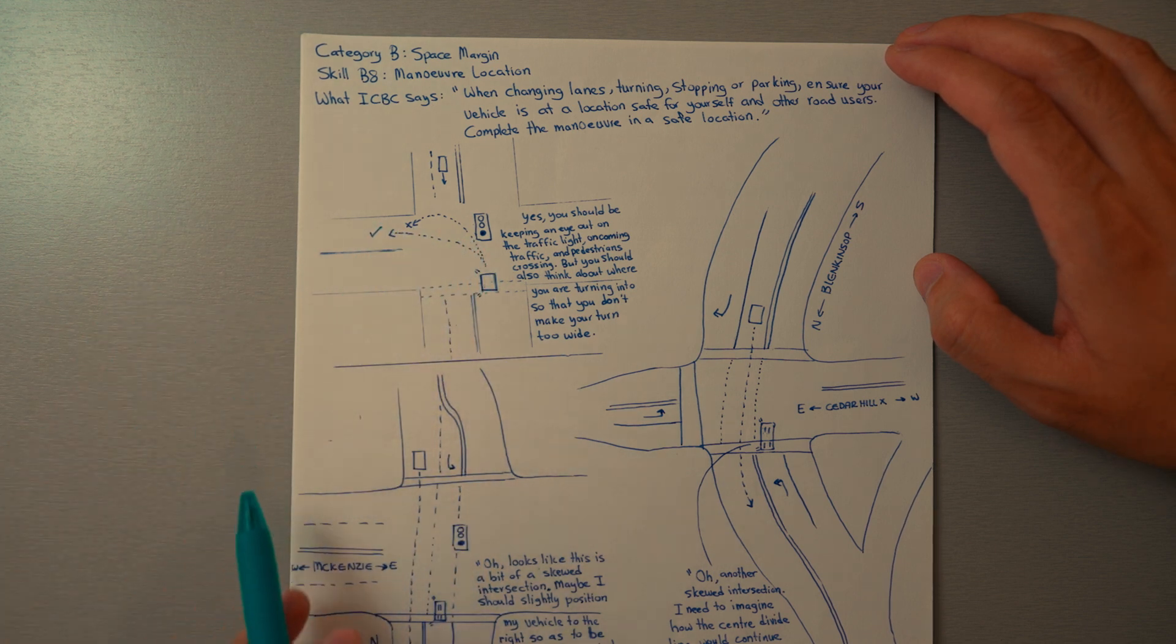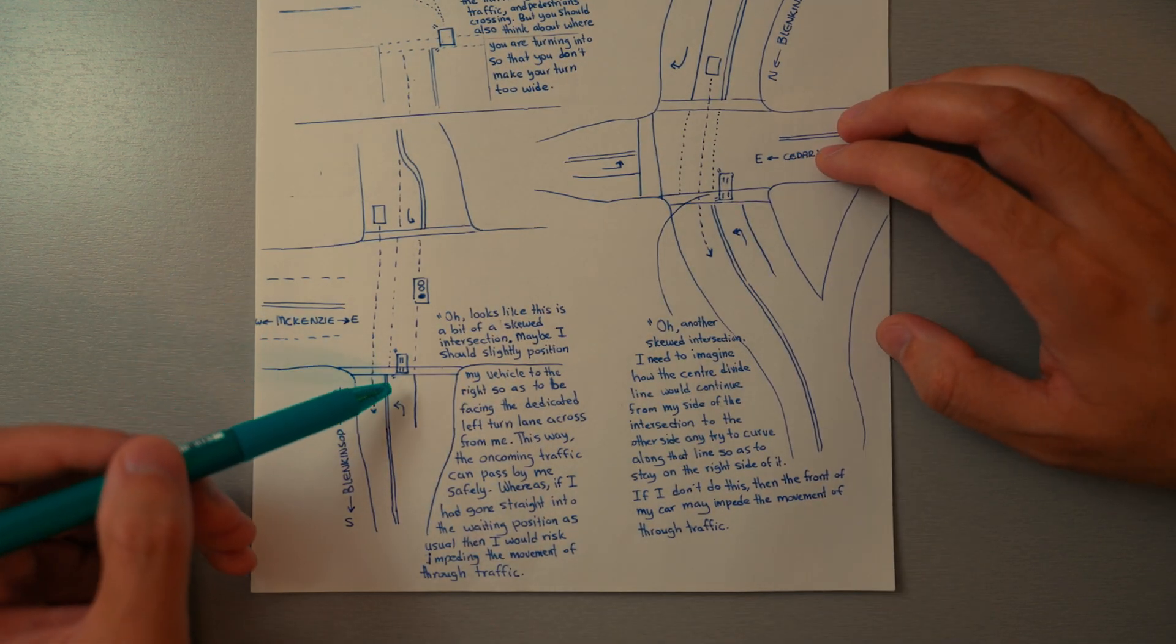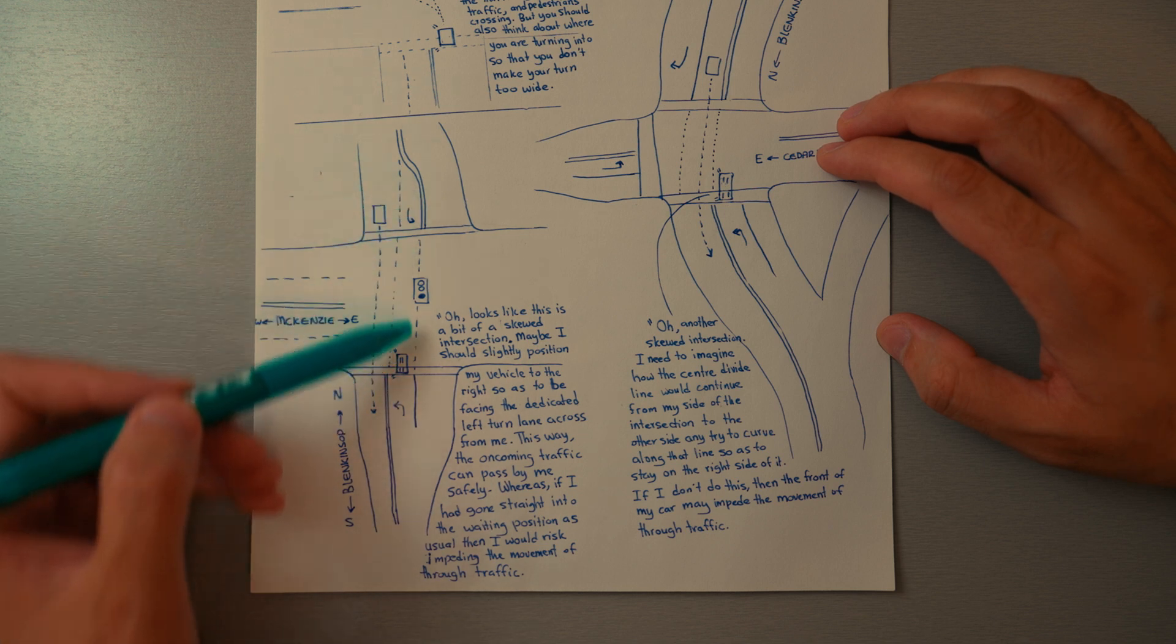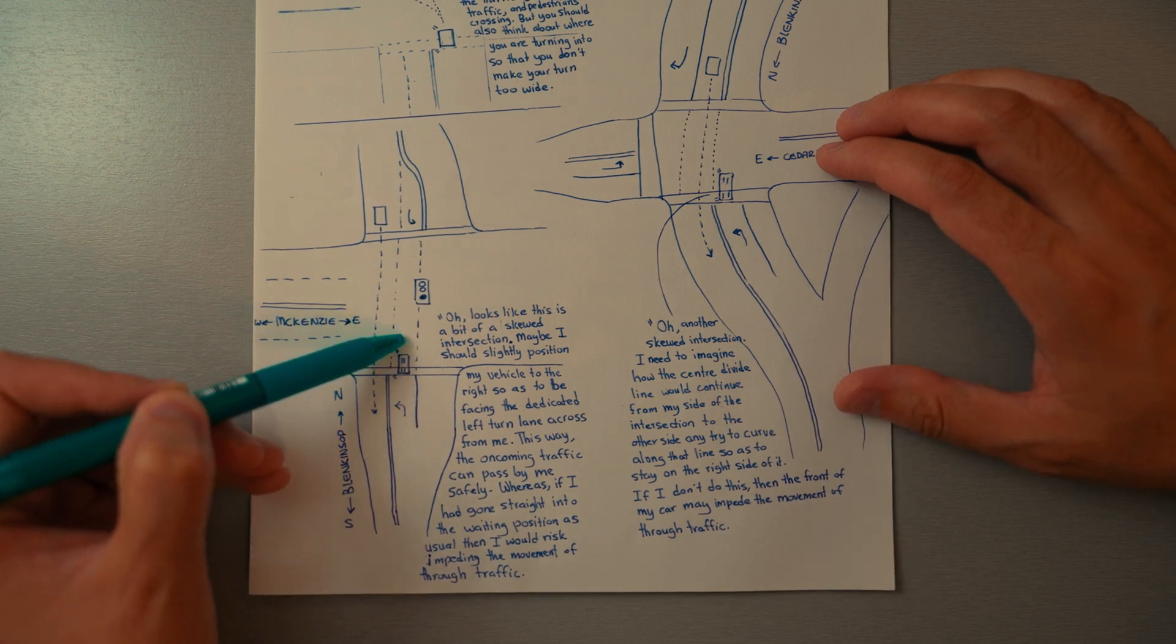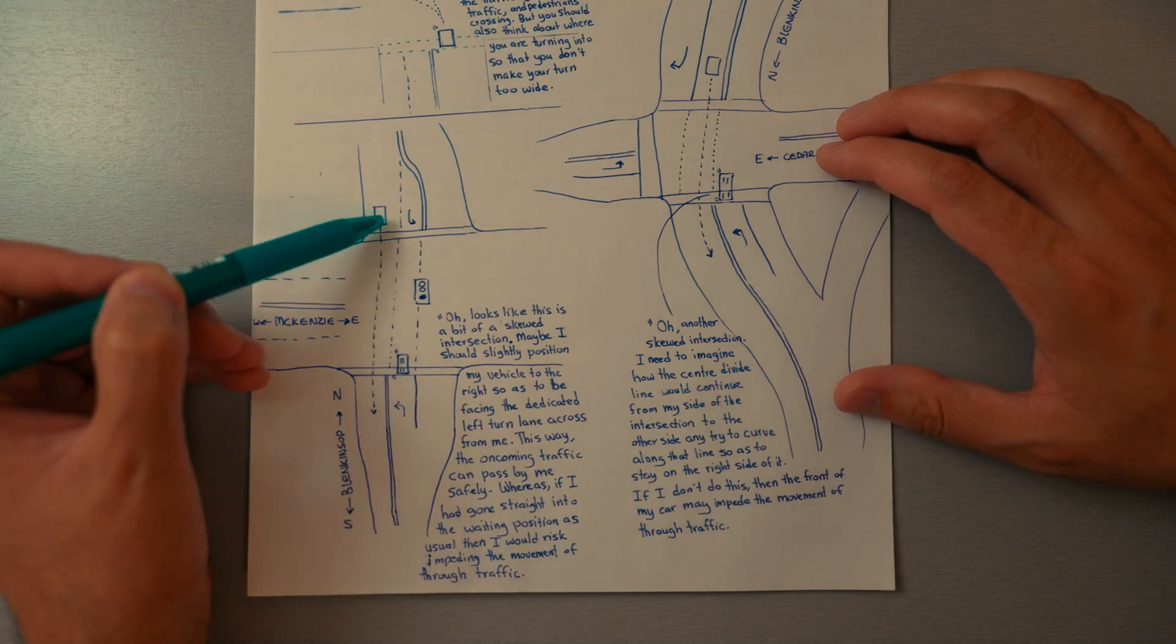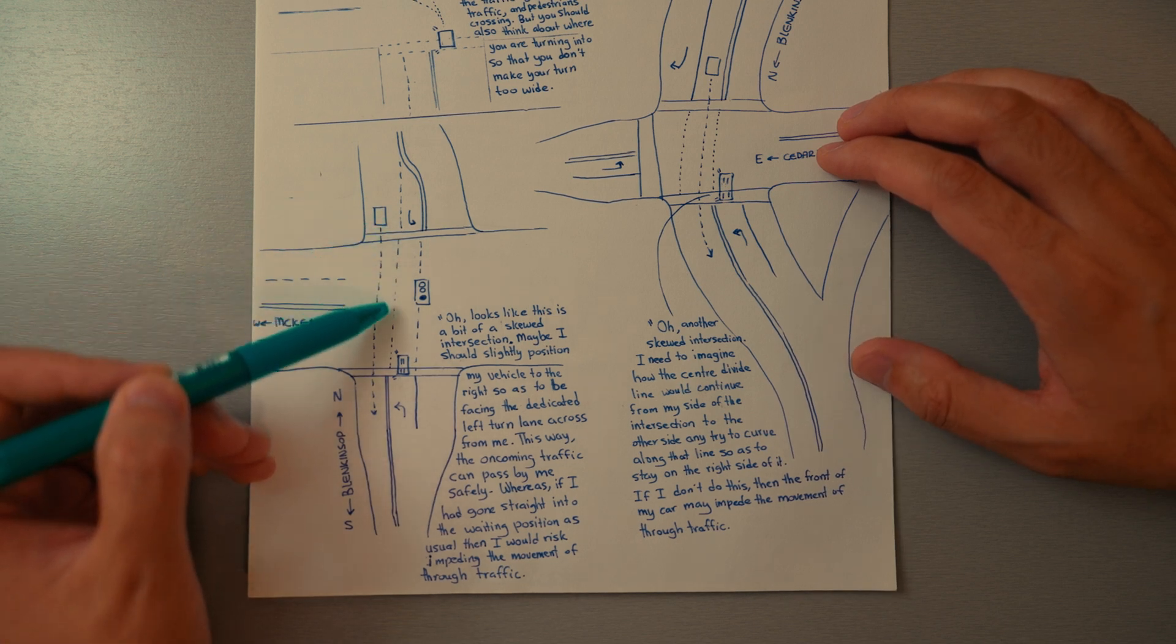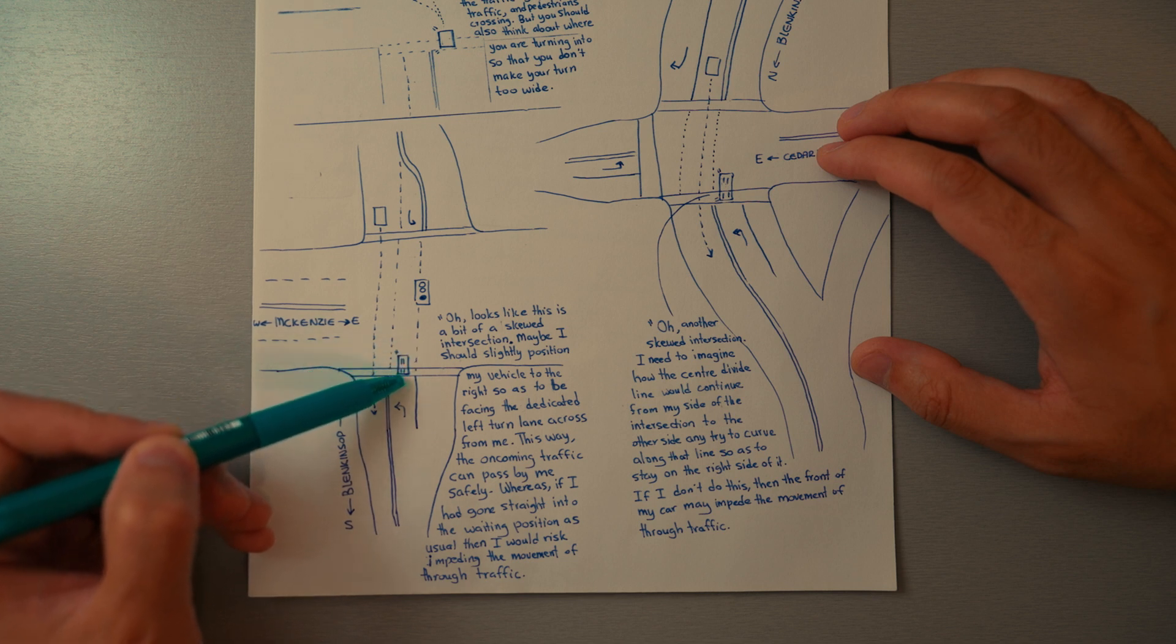Another example: we're coming up to make a left turn and the intersection is a bit skewed. You should be thinking, 'If I come in straight into this intersection, I may be blocking the path of oncoming traffic.' So you should think, 'How do I want to position my vehicle to keep their path clear?'